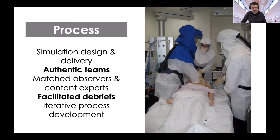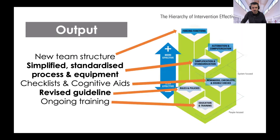We performed facilitated debriefs and did thematic analyses to iteratively improve our process. After fewer than half a dozen simulations we'd really start to achieve saturation — we wouldn't be discovering new things — which is a clue that we've got a mature process in place. Our actual outputs, mapped to a hierarchy of intervention effectiveness, included a new team structure with outside-the-room roles, a simplified and standardised process and equipment setup, modified checklists and cognitive aids, a revised guideline, and an ongoing plan for education and training.